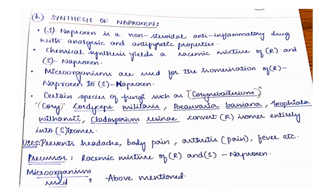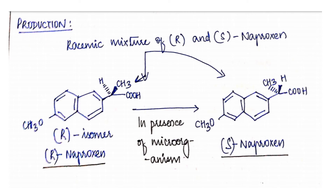We require microorganisms to convert R to S or to separate the racemic mixture. Why do we need to separate? Because one isomer has the desired pharmacological activity and the other may be harmful. So we concentrate on obtaining only one product in pure form. Naproxen relieves body pain and reduces fever. The precursor is both R and S naproxen, and the microorganisms used are Cordyceps, Beauveria, and Cladosporium. Using the microorganism, you convert R into S.